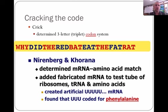It was later proven by Nirenberg and Khorana that mRNA actually can be changed to an amino acid. What they did was create an artificial mRNA segment that had U, U, U, and they got it translated into phenylalanine. That's where they first figured out that mRNA is turning into a protein.